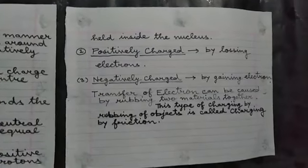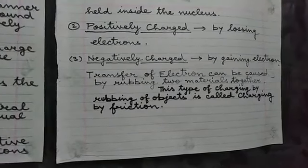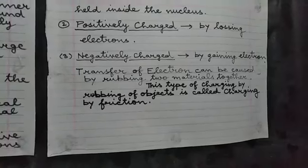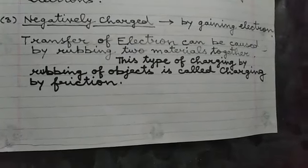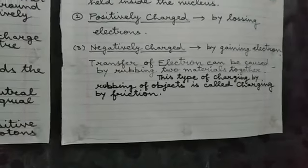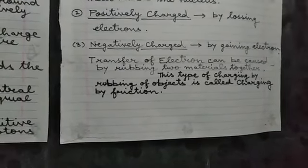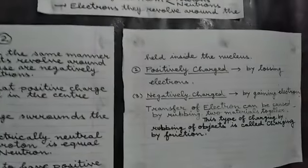Positively charged objects are having more number of protons as compared to the number of electrons. Whereas the negatively charged objects are having more number of electrons and less number of protons, and they become negatively charged by gaining electrons. The process of transfer of electrons can be caused by rubbing of two materials together. This type of charging by rubbing of the object is called charging by friction. So this is all about the structure of the atom as well as how objects are positively or negatively charged.